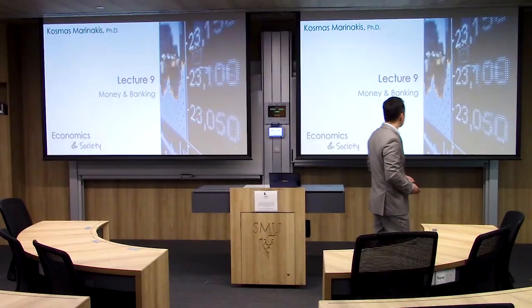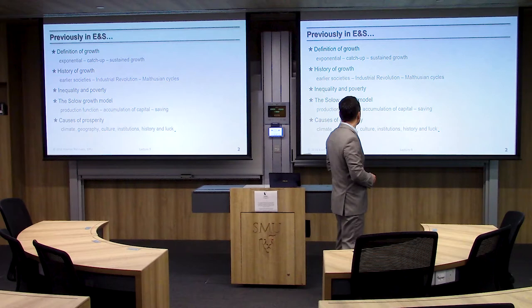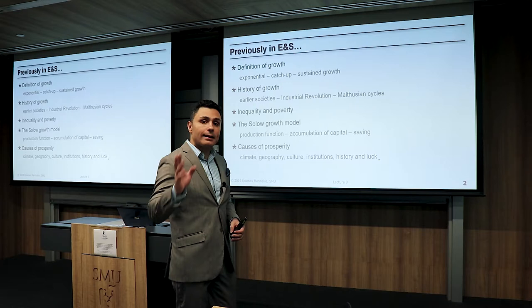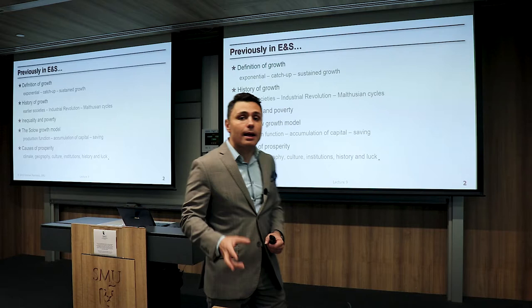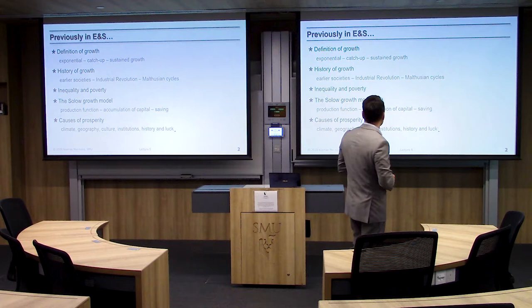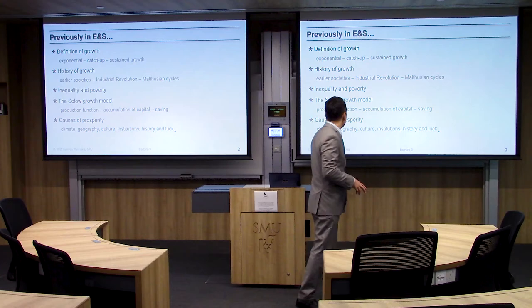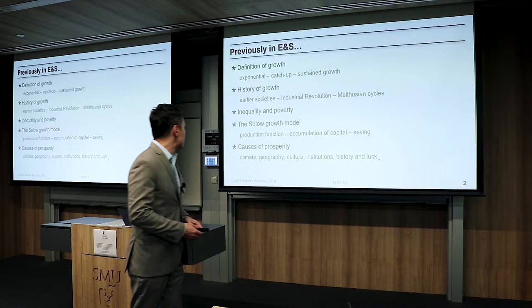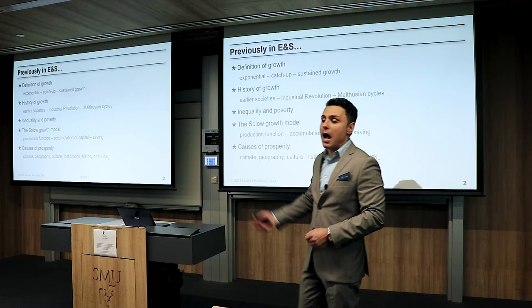We talked about economic growth — how it is exponential, and two kinds: catch-up growth and sustained growth. We had a brief tour in the history of economic growth before the 1800s and the Industrial Revolution. We covered the Malthusian cycle, inequality and poverty, the Solow growth model, the production function, capital accumulation, saving, and finally, causes of prosperity: climate, geography, culture, institutions, history, and other factors affecting economic growth.